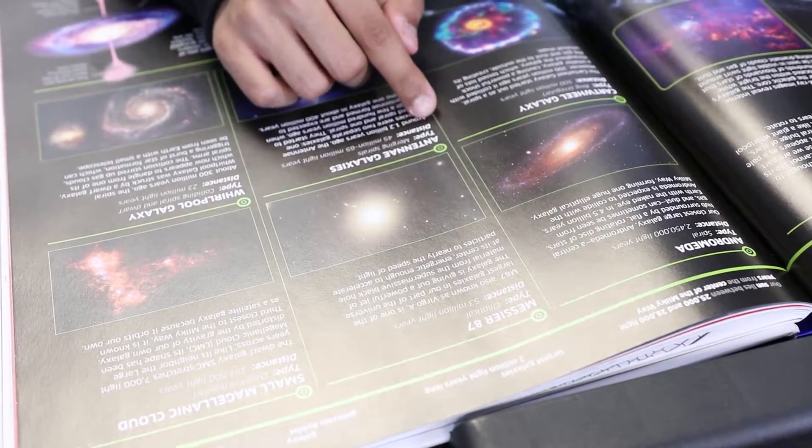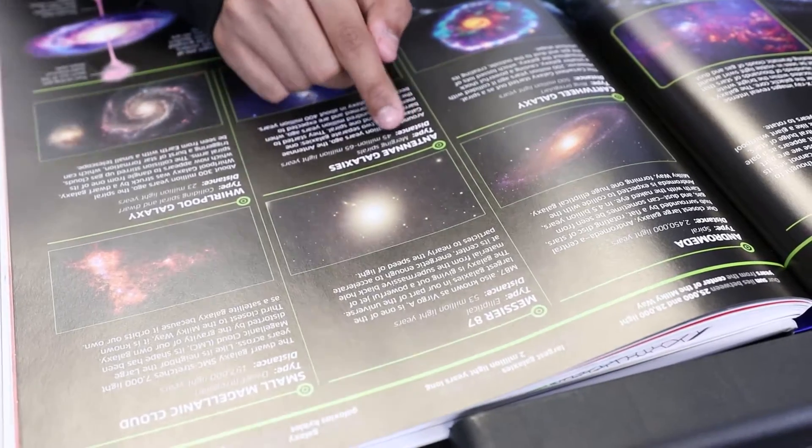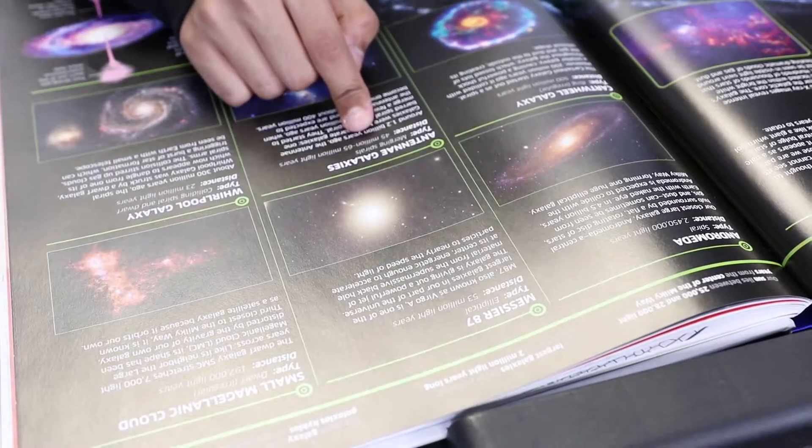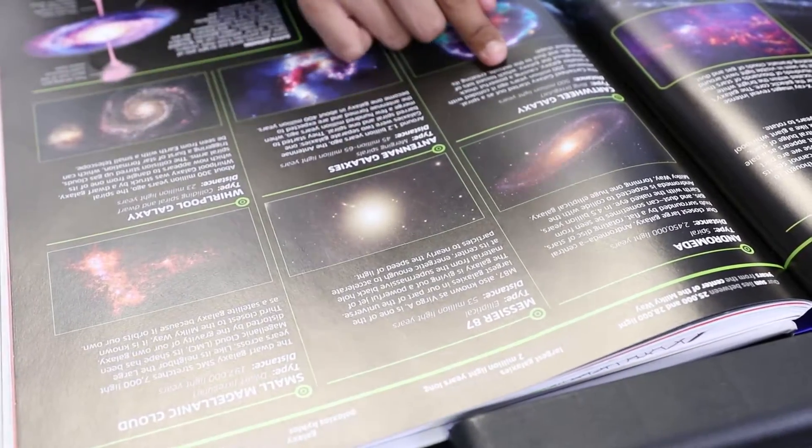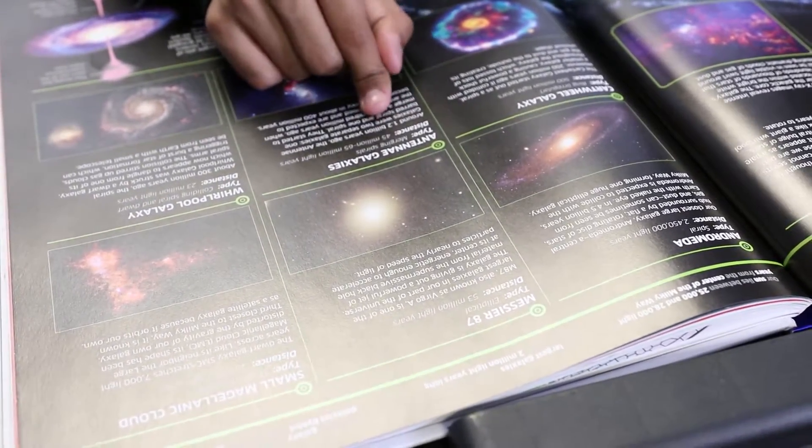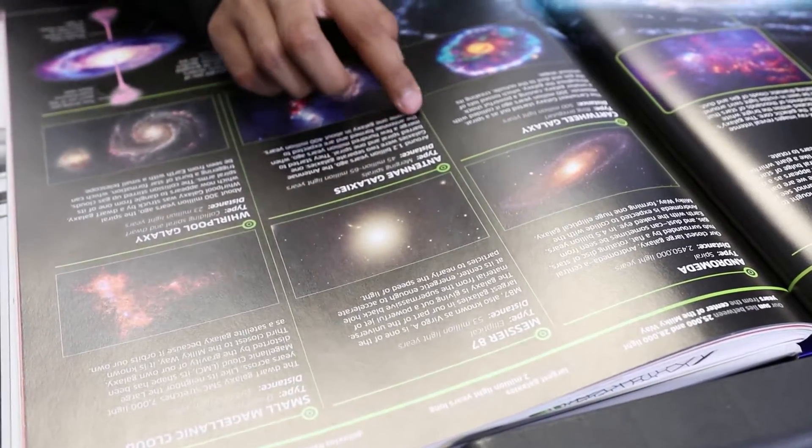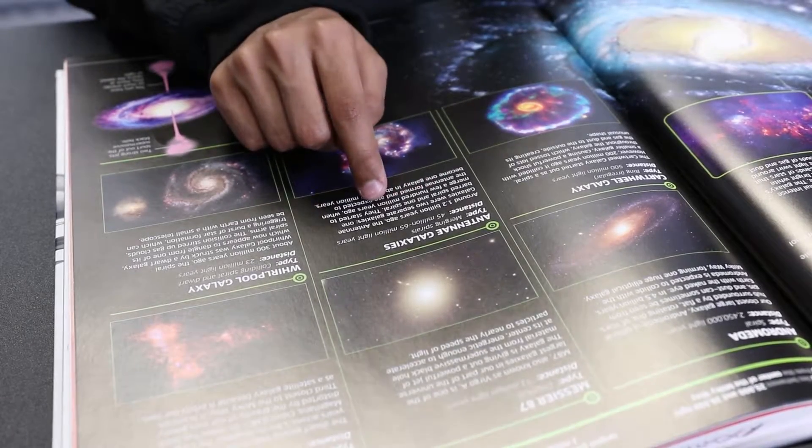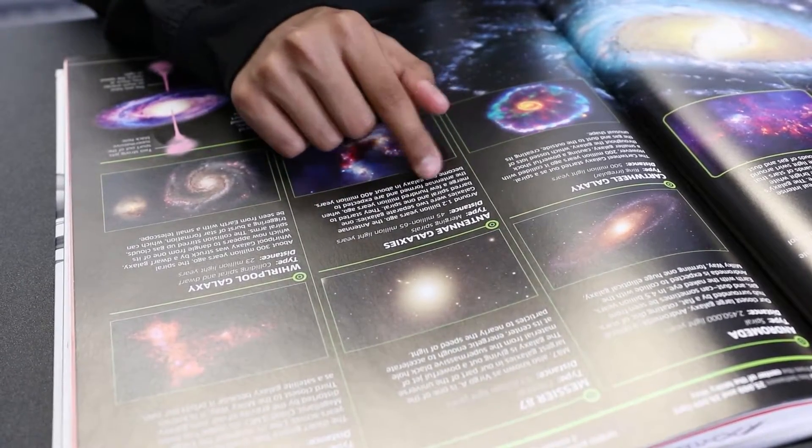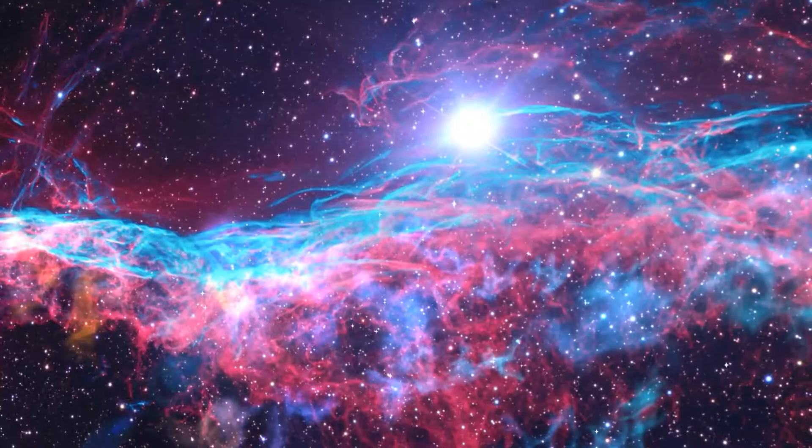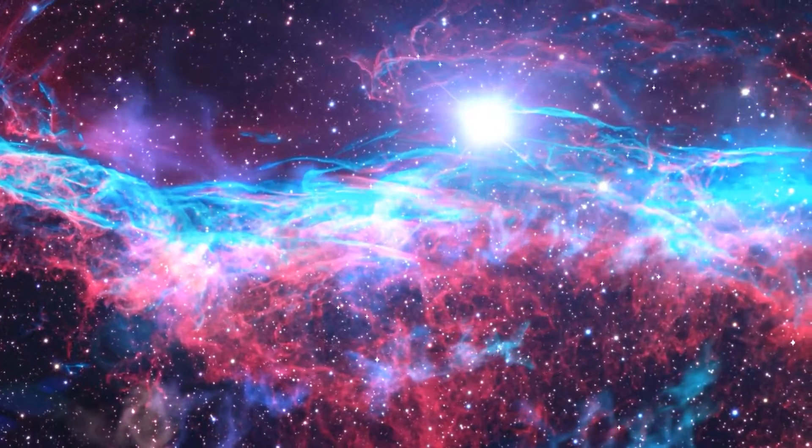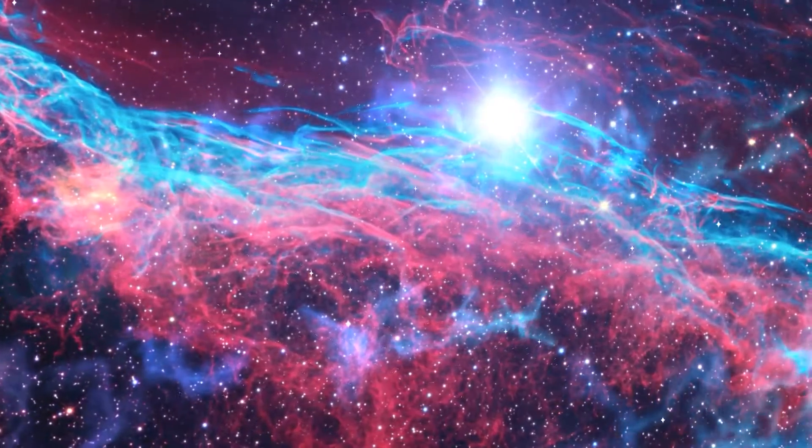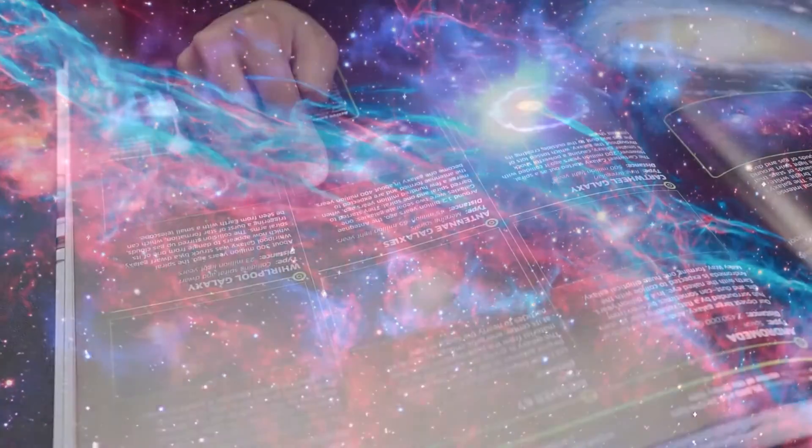The Antennae galaxies. This one is type of interacting spirals at a distance between 45 to 65 million light years away from us. Around 1.2 billion years ago, the Antennae galaxies were two separate galaxies, one barred spiral and one spiral. They started to merge a few hundred million years ago when the antennae formed and are expected to become one galaxy in about 400 million years.